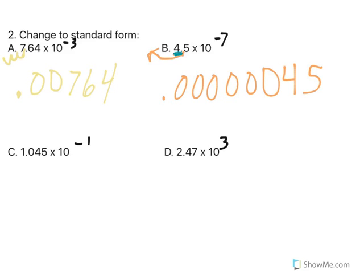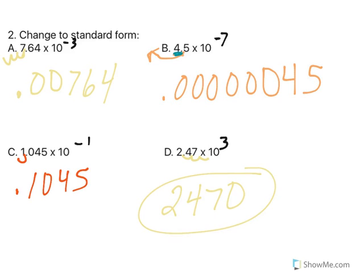In letter C, I'm only moving it 1 place to the left, so 0.1045. And again, when you have a negative exponent, look, all three, A, B, and C are all less than 1. Now in letter D, I have a positive exponent, so it's positive, it's getting bigger. So my decimal goes 3 places to the right, and I end up with 2,470. Bigger than 10 because of a positive exponent.